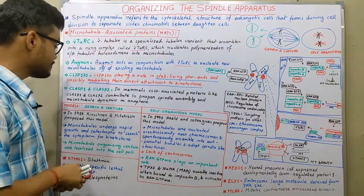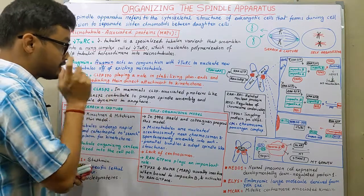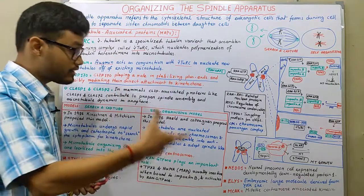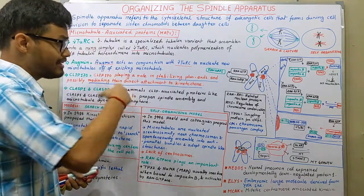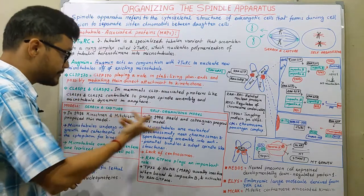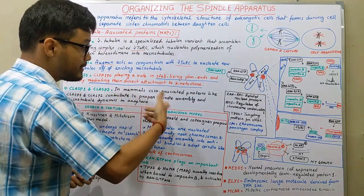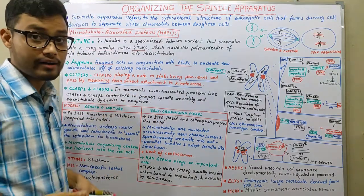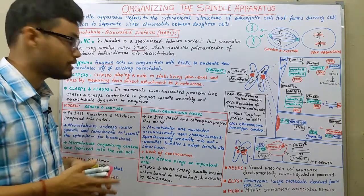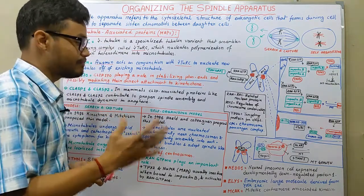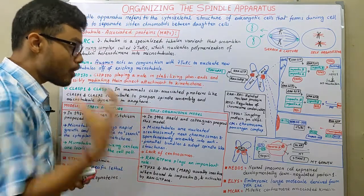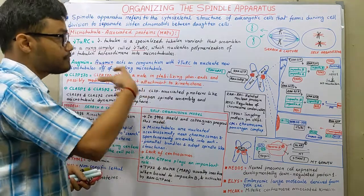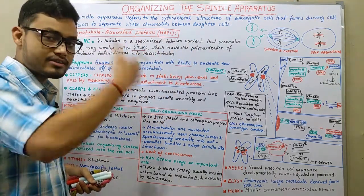The next ones are CLASP1 and CLASP2. CLASP1 and CLASP2 are variants of CLIP-associated proteins. In mammals, CLIP-associated proteins like CLASP1 and CLASP2 contribute to proper spindle assembly and microtubule dynamics in anaphase. CLASP1 and CLASP2 are very much essential to perform spindle assembly or to build a particular spindle assembly complex, and they are present in the case of microtubules that are originated from the centrosomes.